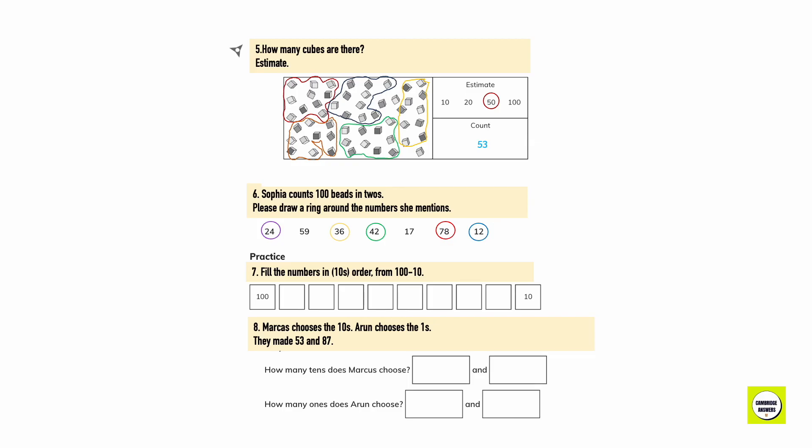Fill in the numbers in tens. Order from 100 to 10. 100, 90, 80, 70, 60, 50, 40, 30, 20, 10. Marcus chooses the tens. Arun chooses the ones. They made 53 and 87. How many tens does Marcus choose? 5 and 8. How many ones does Arun choose? 3 and 7.